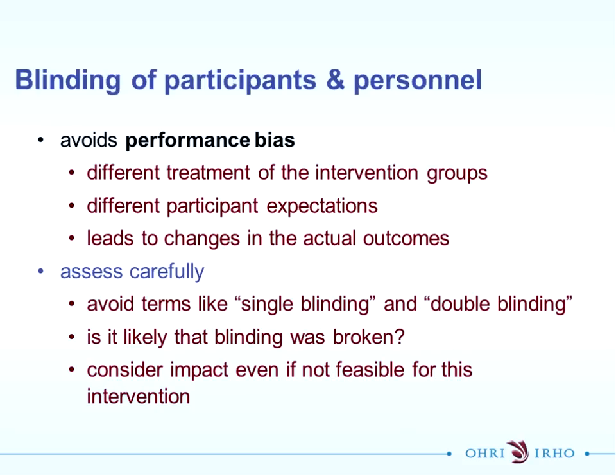They've implied there's no way that people will be able to know the sequence that's been generated, so the allocation has been concealed from the research team. That is why we've decided that's low risk of bias for allocation concealment, and sequence generation is also low risk of bias.